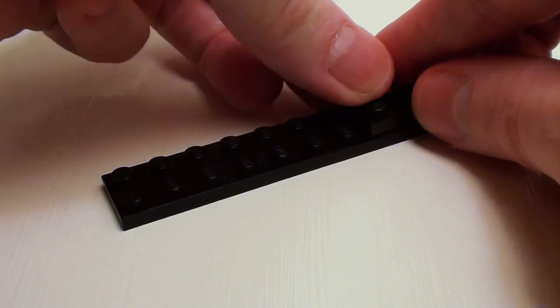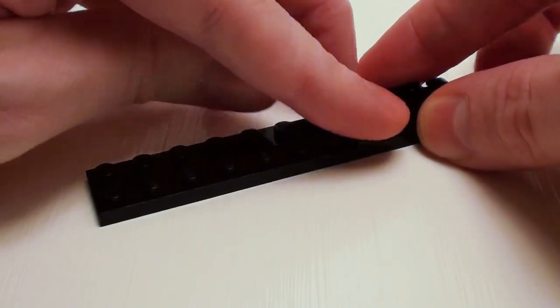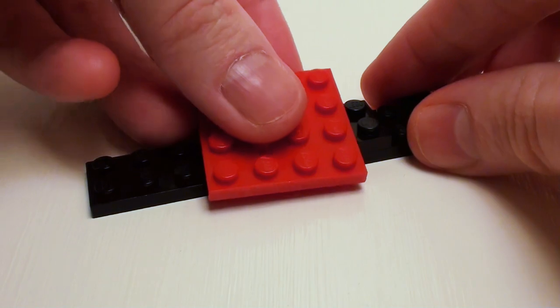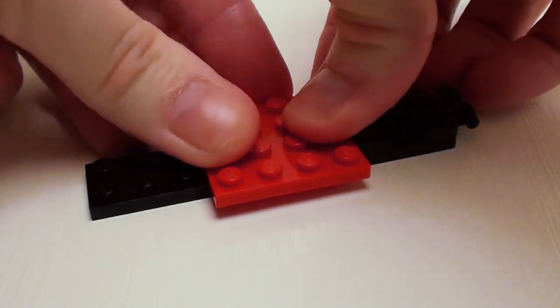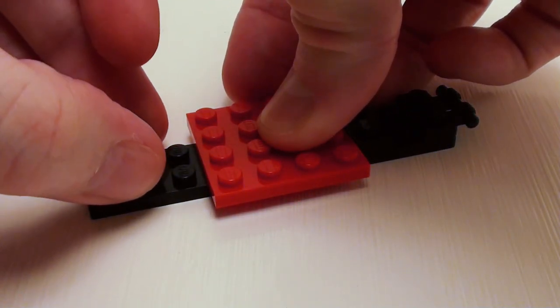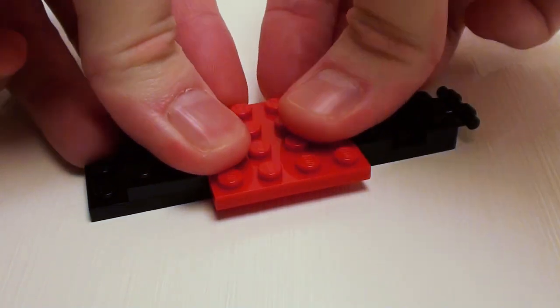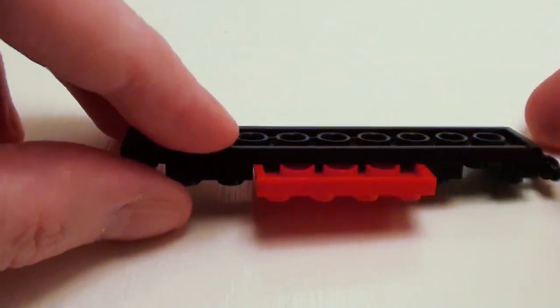I'm going to skip a set of studs and set down a 1 by 2 plate. In this area, a 4 by 4 plate. Next to that, a 2 by 2 plate in that area. Now let's flip the chassis over.